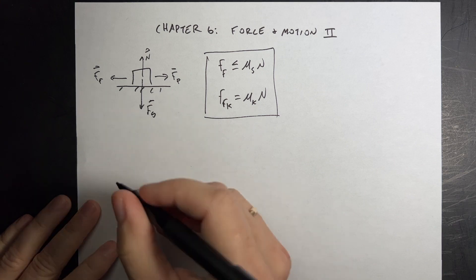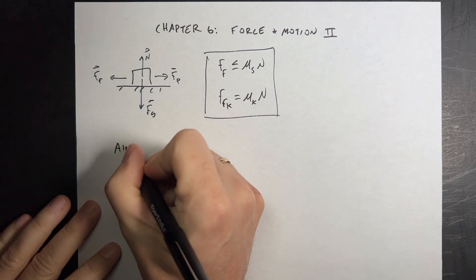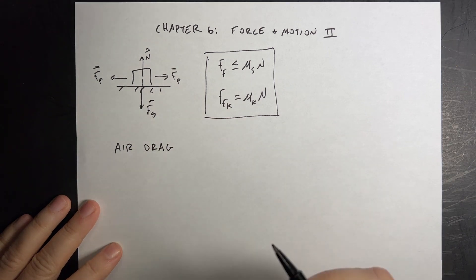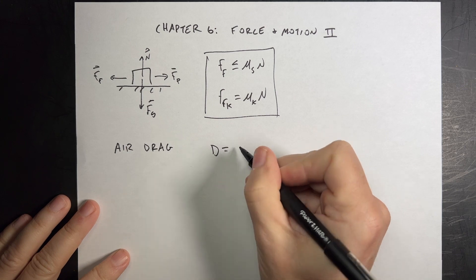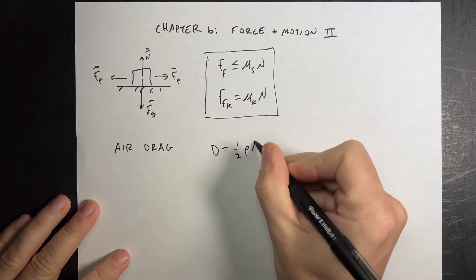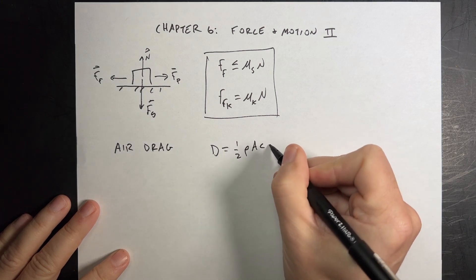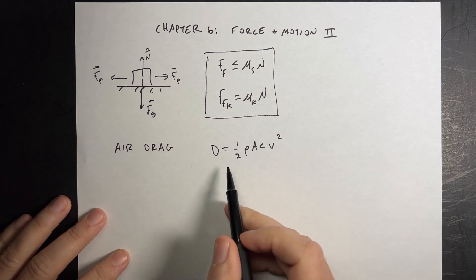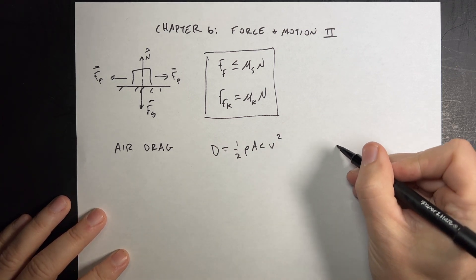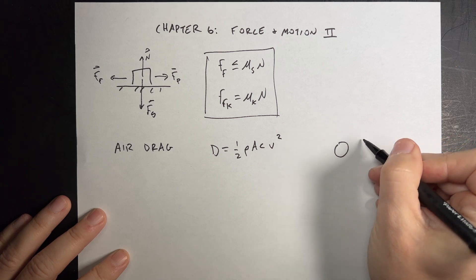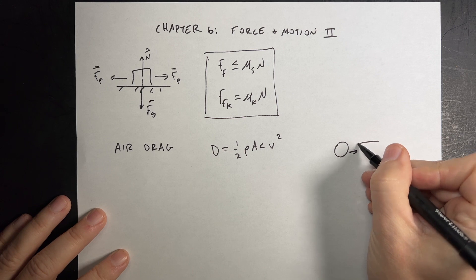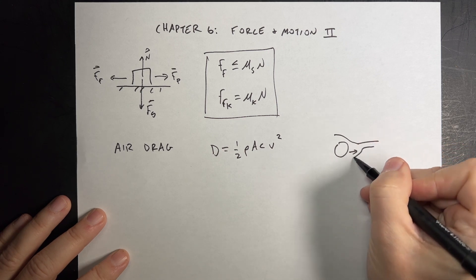The next thing is air drag, which is really a complicated force, but we can model it. So this book just says it like this. D equals one half rho A C V squared. This gives you the magnitude of the drag force. The drag force is a force on an object moving through the air. I'm going to try to see if I draw this. So this is moving this way.